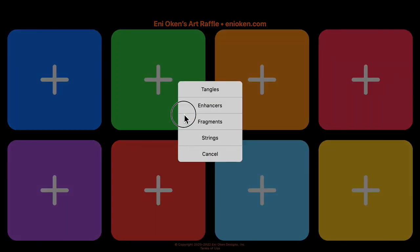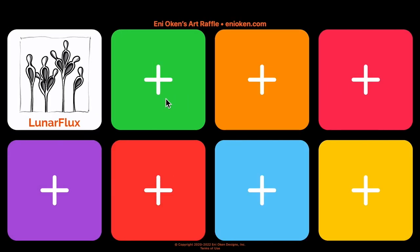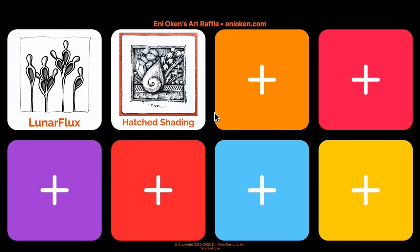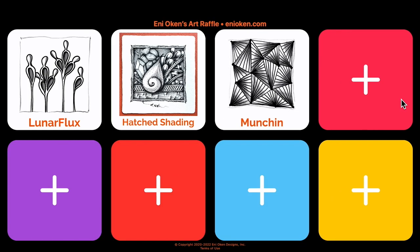Here's a new functionality that I was waiting for a long time. If you long press — which means press and hold for a few seconds — it brings a little menu that allows you to choose the category, the type of card that you want the randomizer to pick. So here I can choose tangle and then it's going to bring me a tangle. If I long press again and choose enhancers, now this time it's going to bring me an enhancer and so on. And you can always use the randomizer and just let it pick for you.